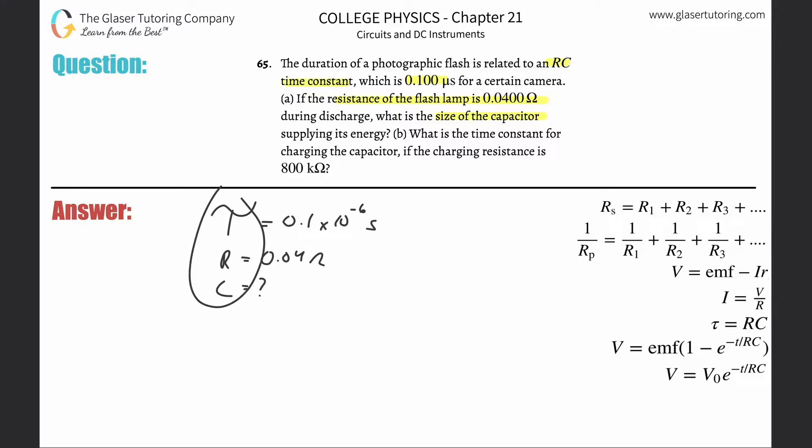They're related via this formula: tau equals R times C, or resistance multiplied by capacitance. If I want to solve for the capacitance, just divide out R from both sides, and we realize that the capacitance will be equal to the time constant divided by the resistance.